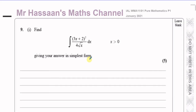So what we must do here is prepare this for integration. There are two things we need to do: one is to expand the bracket on top, and the other is to express the denominator in index form and write it as a numerator. So we need to simplify this whole thing. Let's start by simplifying it without writing the integral sign.